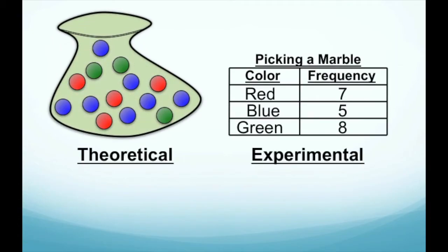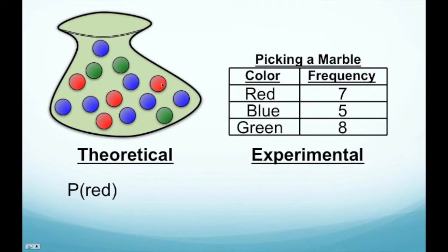Now we're dealing with selecting marbles from a bag. There are fourteen marbles in the bag, of which four are red. So the theoretical probability of selecting a red marble is four out of fourteen, which reduces to two sevenths.